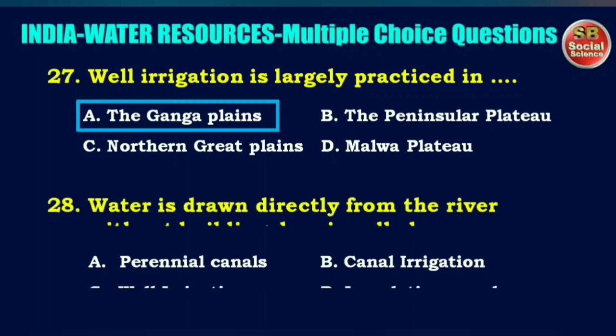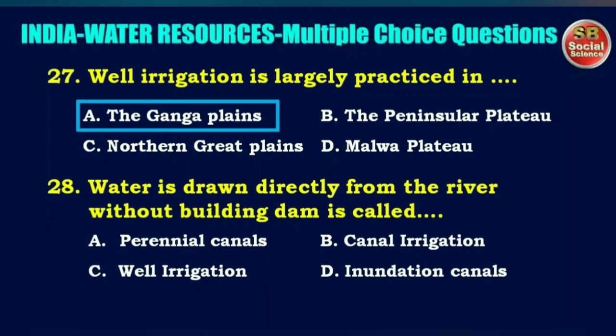Water drawn directly from the river without building a dam is called — options are perennial canals, canal irrigation, well irrigation, or inundation canals. The right answer is option D: inundation canals.